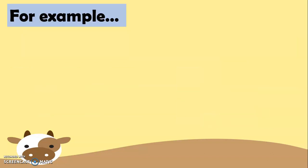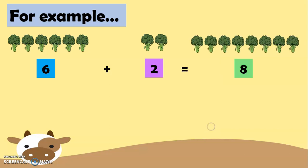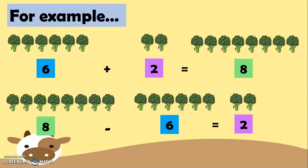So, for example, we have here 6 broccolis plus 2 more broccolis. And we will have 8 broccolis because we put 6 and 2 together. But when, for example, we have 8 broccolis, but we subtract 6 broccolis or we remove 6 broccolis, then we will have 2 broccolis. There you go.